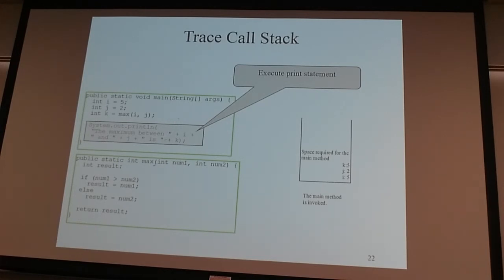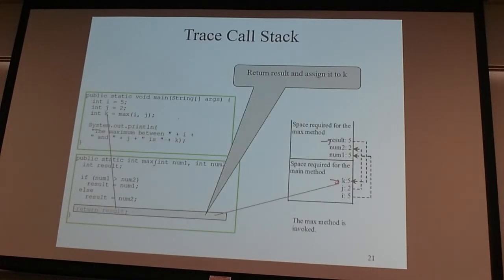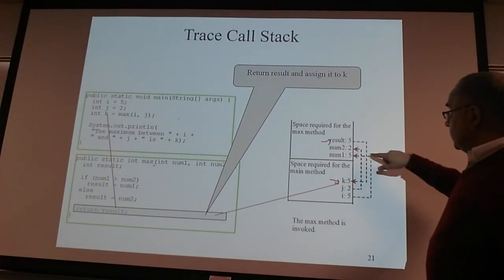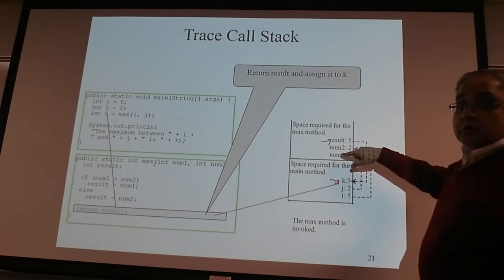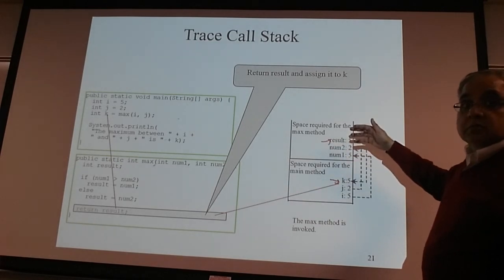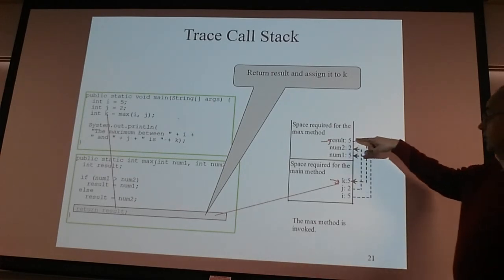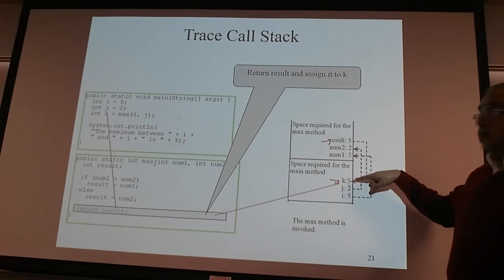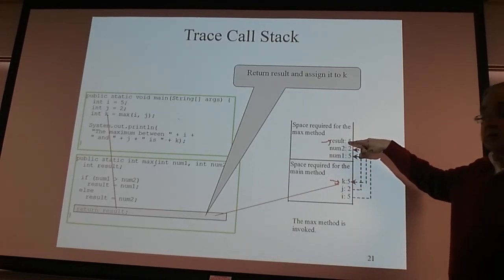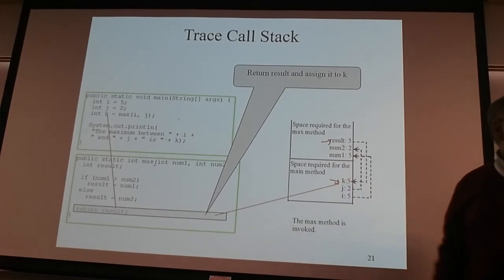What we just covered was also the concept of pass by value. When I interact with i and j, I'm making a copy of the value into num1 and num2 — that's pass by value, a common term used when working with functions. Next quarter, if you take advanced Java, you'll learn about pass by reference, where you pass an address. Returning a value is also pass by value, because we're making a copy of what's in result back to k.